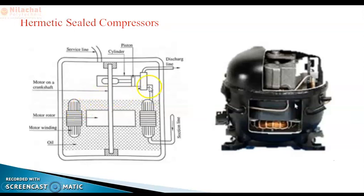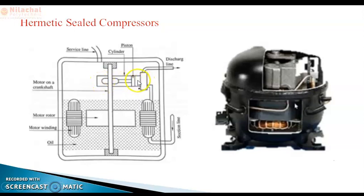Then the refrigerant goes to the compressor. This is different from other types of compressors — here the suction line is not directly connected to the compressor. As in the previous process, the piston moves from left to right: during this stroke, the low-pressure vapor refrigerant is drawn into the compressor, then compressed and discharged to the condenser.